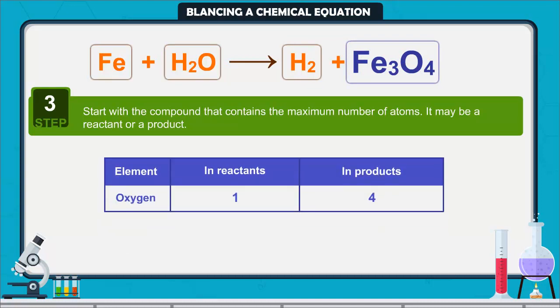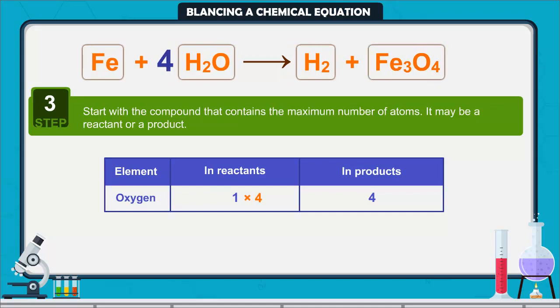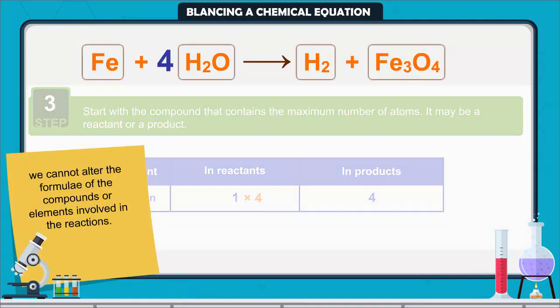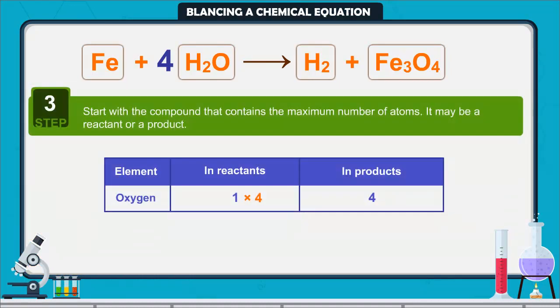There are four oxygen atoms on the right hand side and only one on the left hand side. To balance oxygen atoms we can put coefficient 4 as 4H2O and not H2O4, because we cannot alter the formulae of the compounds or elements involved in the reactions. Now the equation is partly balanced.